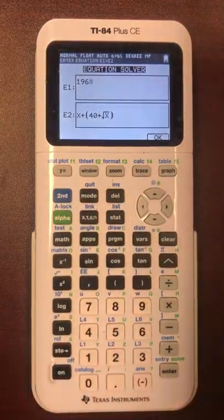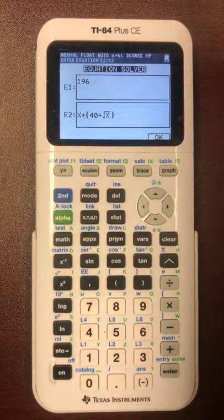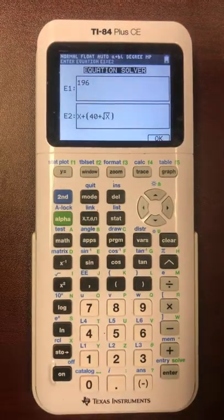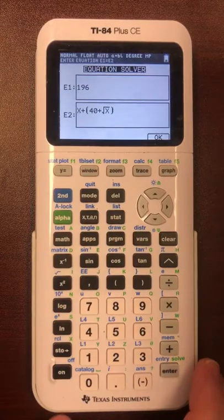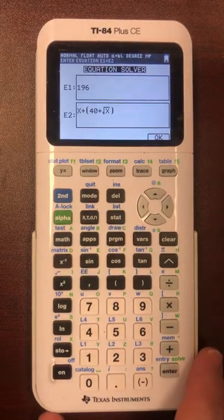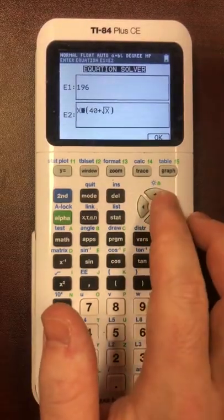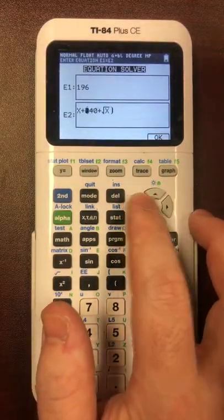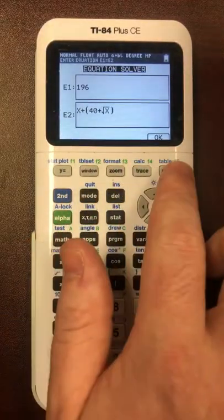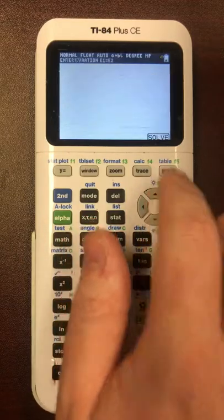So what you do is you type the first equation that you have. In this case, 196 is what the whole thing equals. And then the equation that we just mentioned is X plus 40 plus root X. Big plus the equation we have for the little one. Then you hit the top right button here where it says okay.